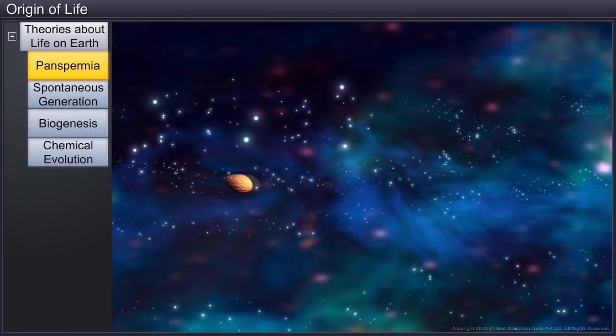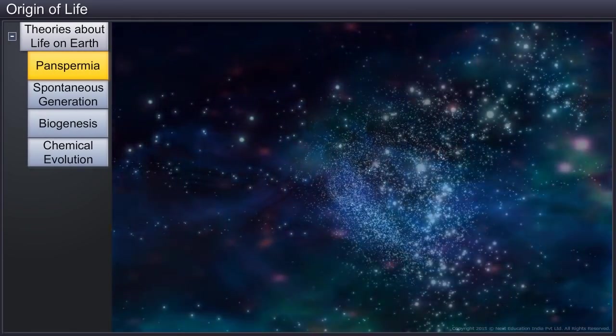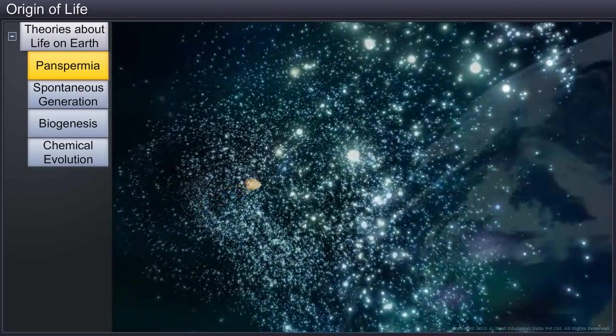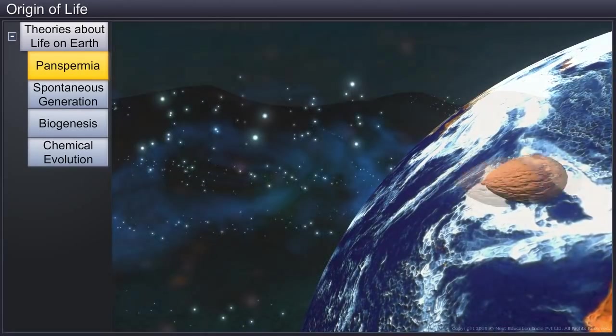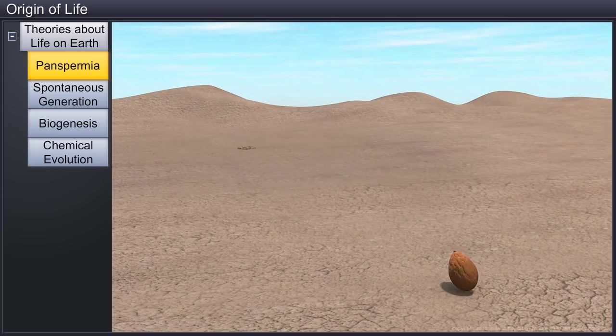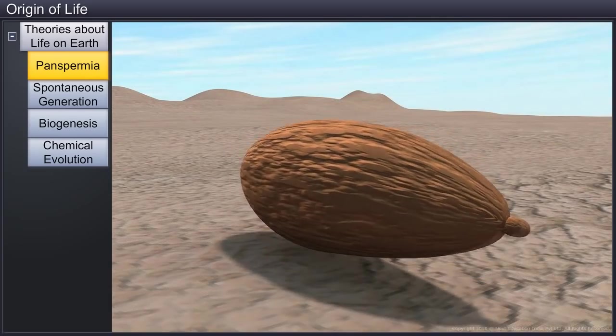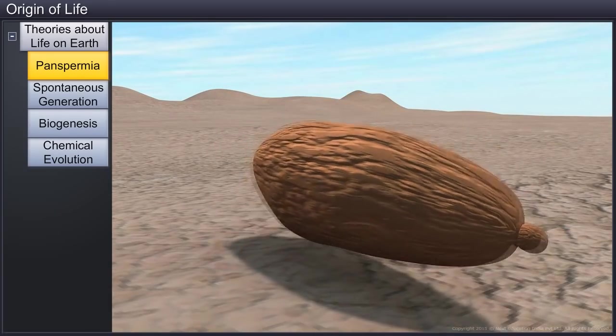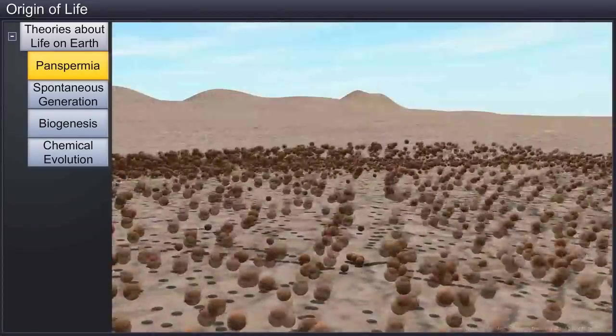Panspermia is the oldest theory founded by Greek thinkers. It explains that units of life called spores were transferred to different planets. Panspermia assumes that seeds of life exist all over the universe.